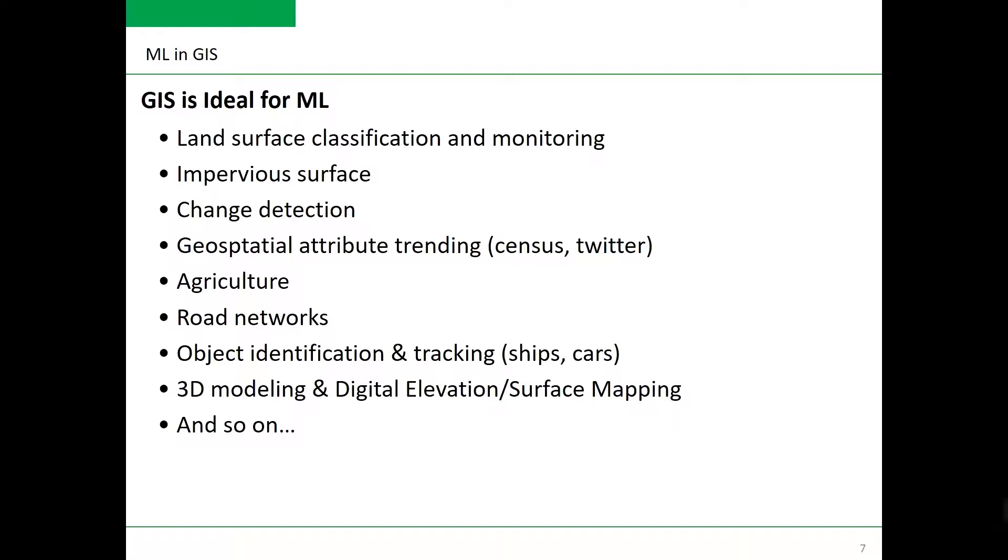On this slide, you can see more examples of applications of machine learning and deep learning in GIS-assisted analysis. We can use machine learning in GIS for land surface classification and monitoring, impervious surface mapping, change detection, geospatial attribute trending from census and Twitter data, agriculture, road network extraction, object identification and tracking of ships and cars, 3D modeling and digital elevation surface mapping, and so on. There are numerous applications and more applications are being created almost every day.